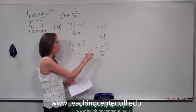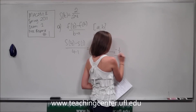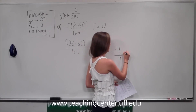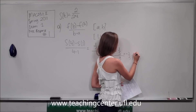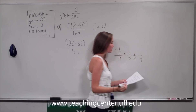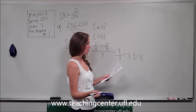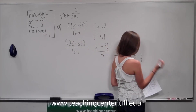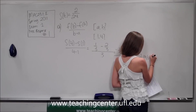We can simplify: 1 third minus 2 thirds is negative 1 third, all divided by 3. We can bring the 3 up, so it becomes negative 1 third times 1 third, which is equal to negative 1 ninth. That is our average velocity, and we also have to include units. Our units are meters per second because it's a rate, so it's negative 1 ninth meters per second.